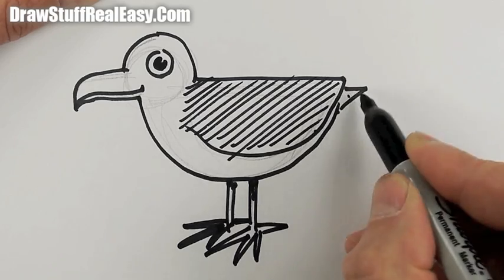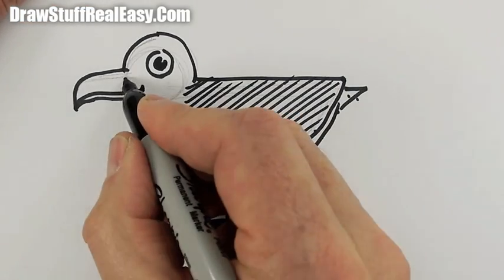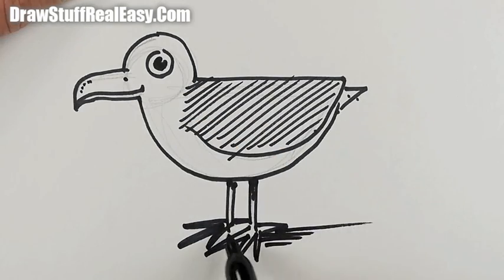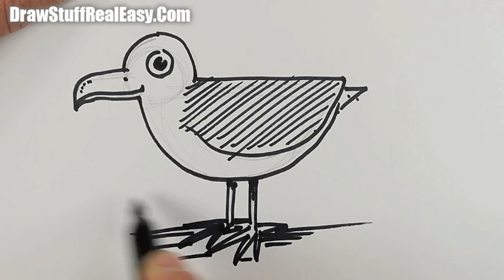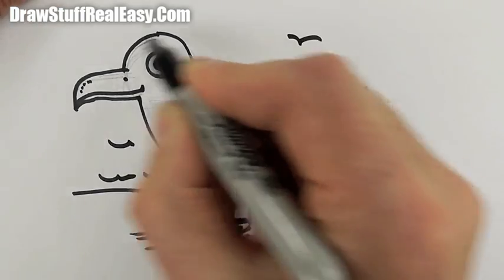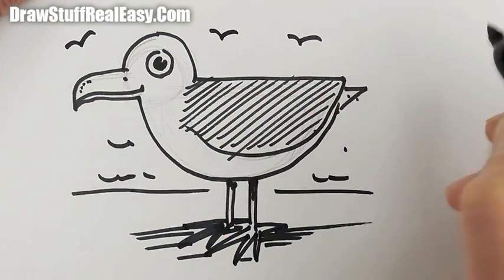Shade those wings because they're usually a bit darker. Little nose hole like that. Bit of shading on the ground. The sea in the background, maybe a few seagulls flying in the air.